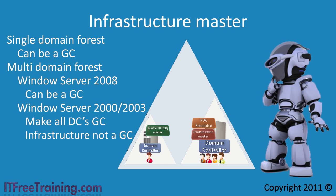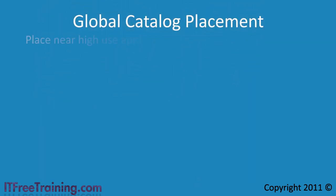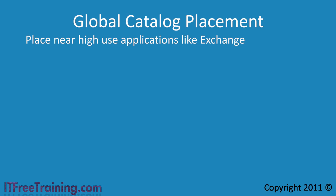If you decide not to make all your domain controllers global catalog servers, you should give some thought to the placement of your global catalog servers. Applications such as Exchange make a lot of use of global catalog servers. If the Exchange server has to go over a wide area network to reach a global catalog server, this may affect performance. For this reason, if you are using Exchange or a similar product, you should have a global catalog server on your local network.